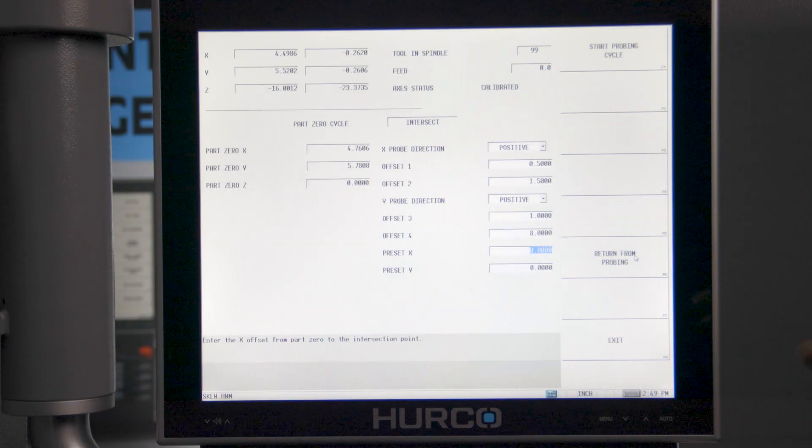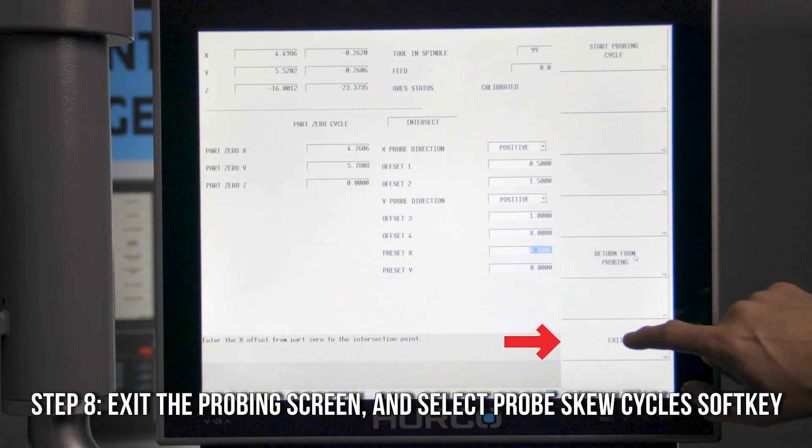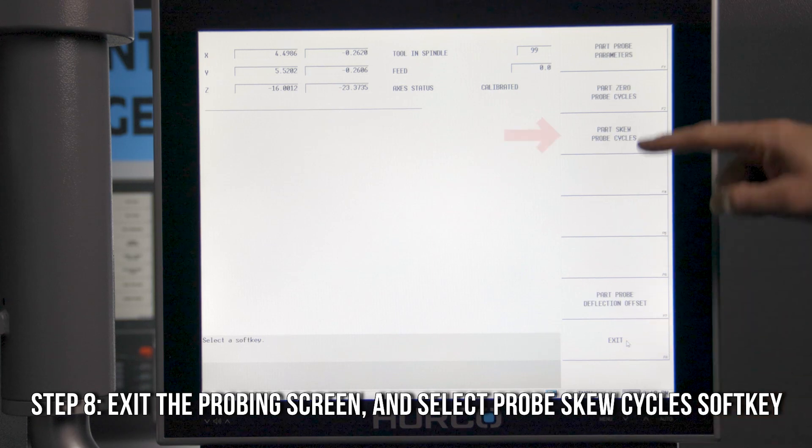Once we have our part zero set, we want to move on to our skew cycles, so you will need to exit the probing screen and select Probe Skew Cycle Soft Key.